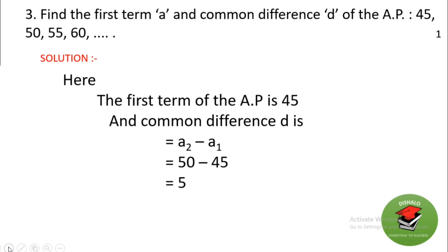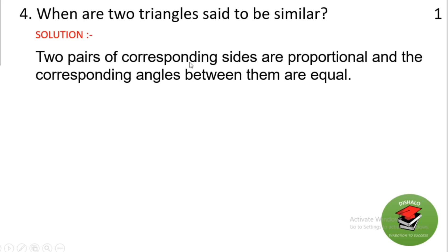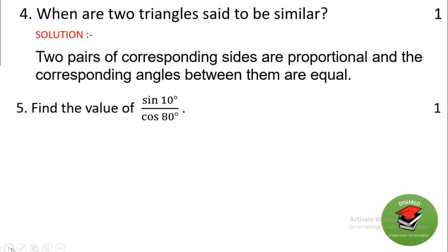Next: when are two triangles said to be similar? Two pairs of corresponding sides are proportional and the corresponding angles between them are equal. This is the area theorem statement — two triangles are similar if corresponding sides are proportional and corresponding angles are equal.